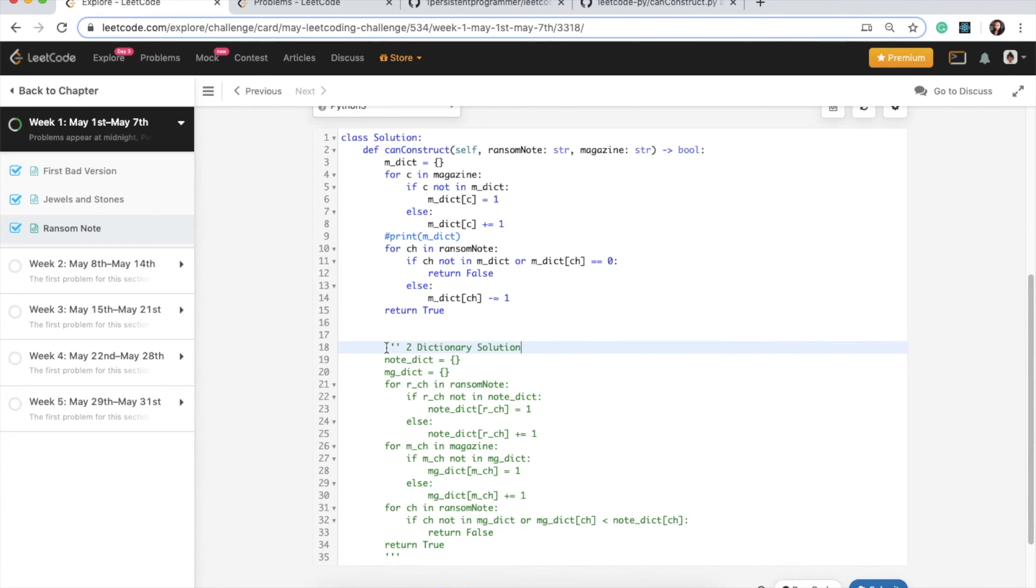So I'm back in LeetCode and what I've done is I've just commented out my previous solution which had the two dictionaries and instead I've just created one dictionary which is the magazine dictionary. What I'm doing here is just populating the magazine dictionary each time I encounter a character and then I have implemented the two conditions here. So if the character is not in the dictionary or if the frequency of that character is zero then we cannot create that ransom node subset. So in that case return false otherwise if we encounter a character that we have seen already we just decrement the count by one. And if all of this passes then we can return true.